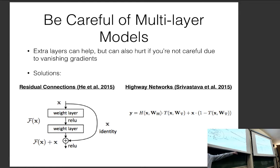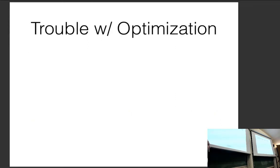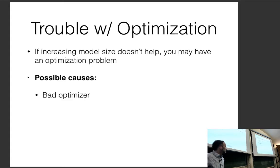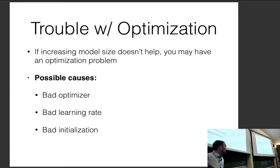This is paramount: if you start using more than two layers, you will see a really dramatic drop-off in accuracy if you don't use residual or highway connections. This is something you should always be doing if you're training deeper networks. Another issue is trouble with optimization — you have a big high-capacity model that should be able to fit the data, but your training objective is not allowing you to fit it. Possible causes include a bad optimizer, bad learning rate, bad initialization, or a bad mini-batching strategy.